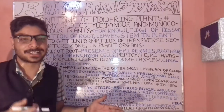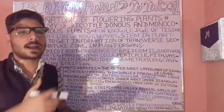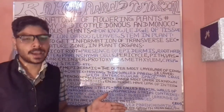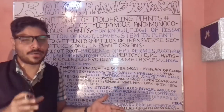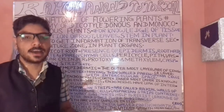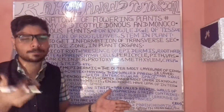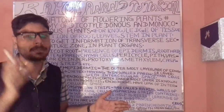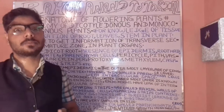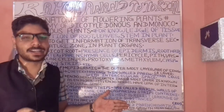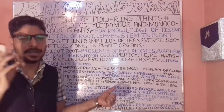The cortex is particularly composed of parenchyma cells, and these are having intercellular spaces. The intercellular spaces refer to the spaces between the cell structures. These intercellular spaces are present in the cortex region.